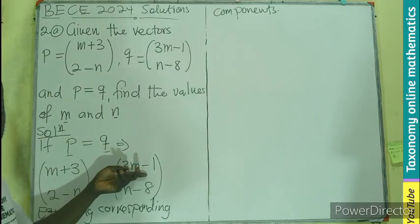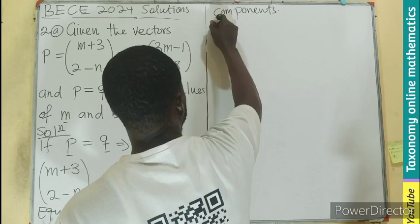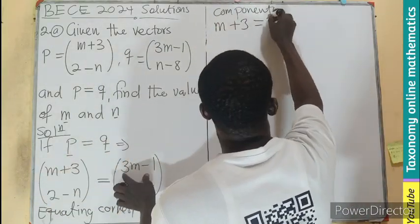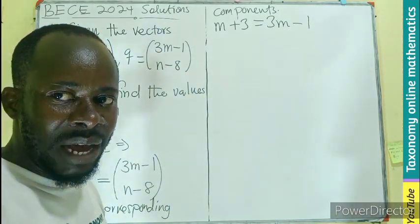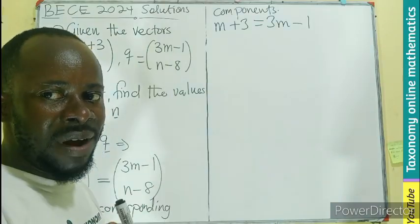Corresponding components. This is x-component, x-component. They are the same, so we equate it together. That means I'll be having M plus 3 from the left equals to 3M minus 1 at the right. That's the equation we can get from there. And you see that we have variables, we group the variables together.